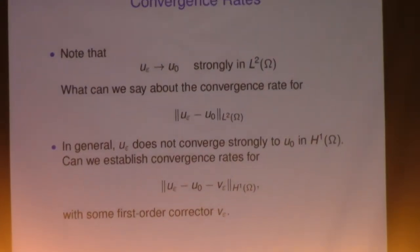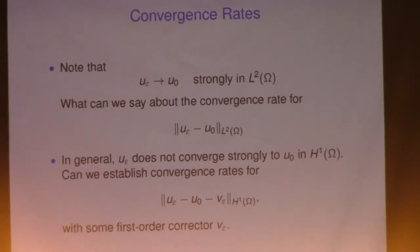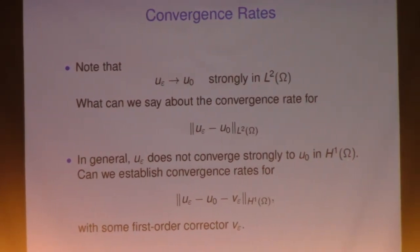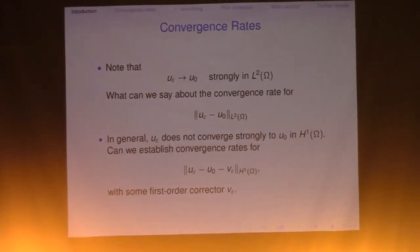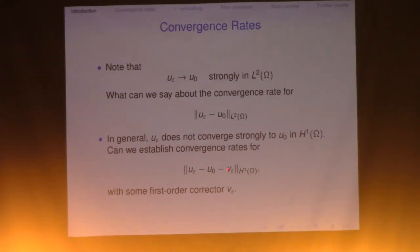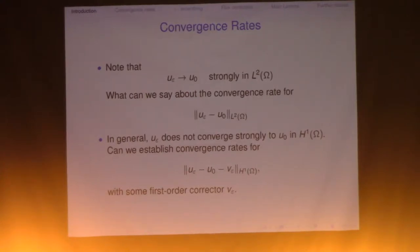Today we're going to look at the problem of convergence rate. We know the solution converges strongly in L^2, so it makes sense to ask: what is the convergence rate for the difference u_epsilon minus u_0 measured in the L^2 norm? Also, in general, unless the corrector is zero, the solution does not converge strongly in H^1. However, we can ask: if we allow subtracting another term — which we call the first-order corrector — then what can we say about strong convergence in H^1 with this first-order corrector? These are the questions we are going to address today.